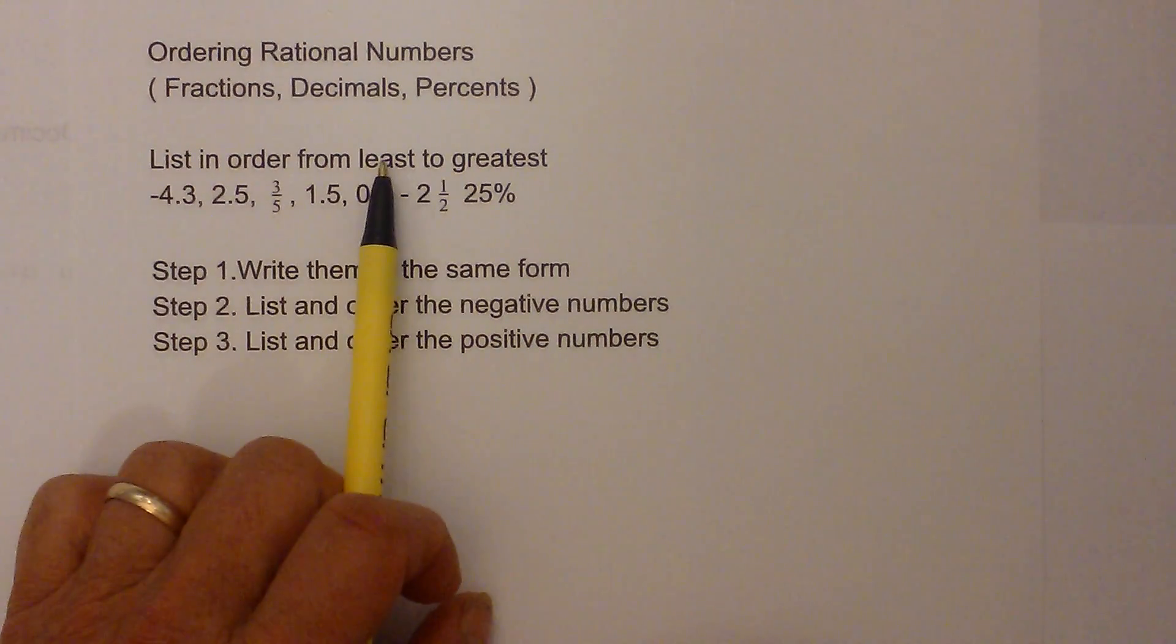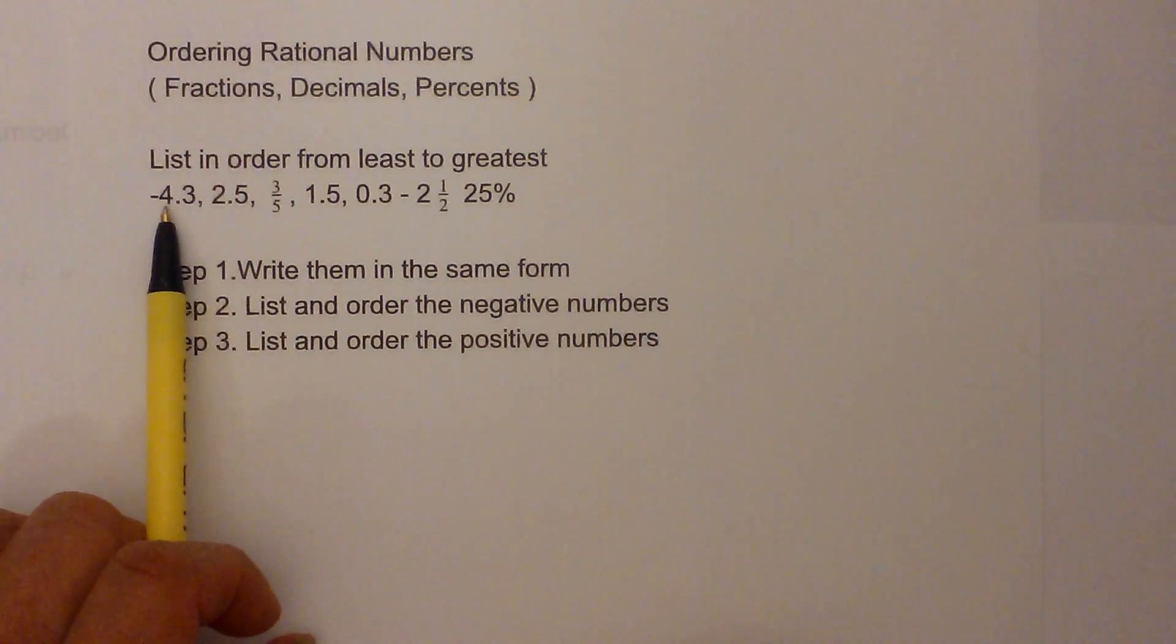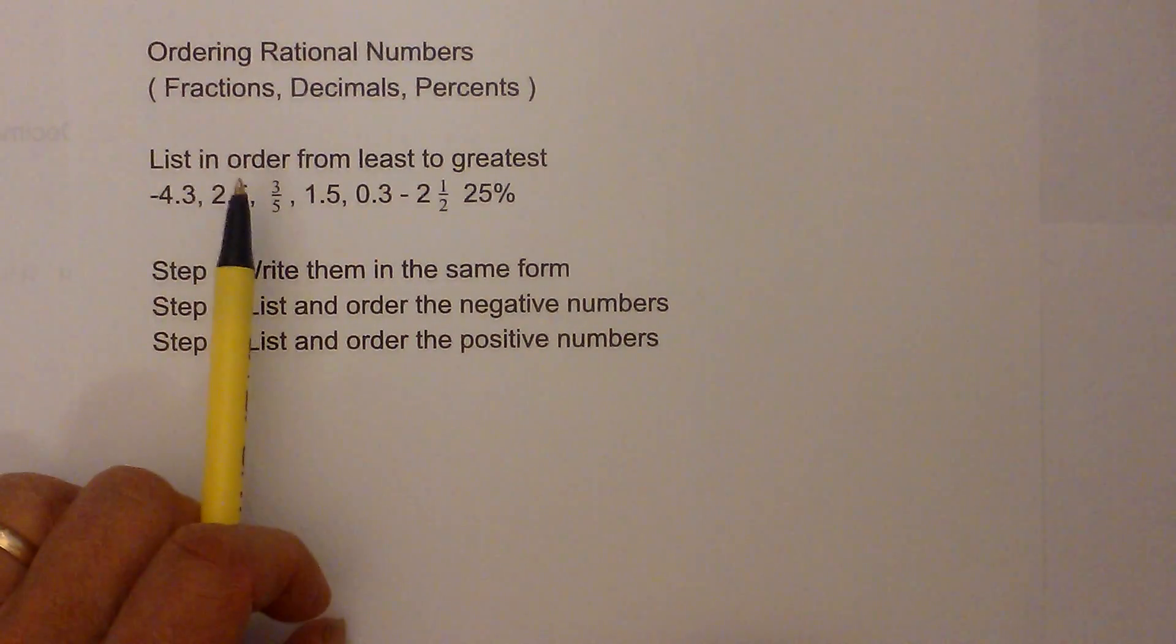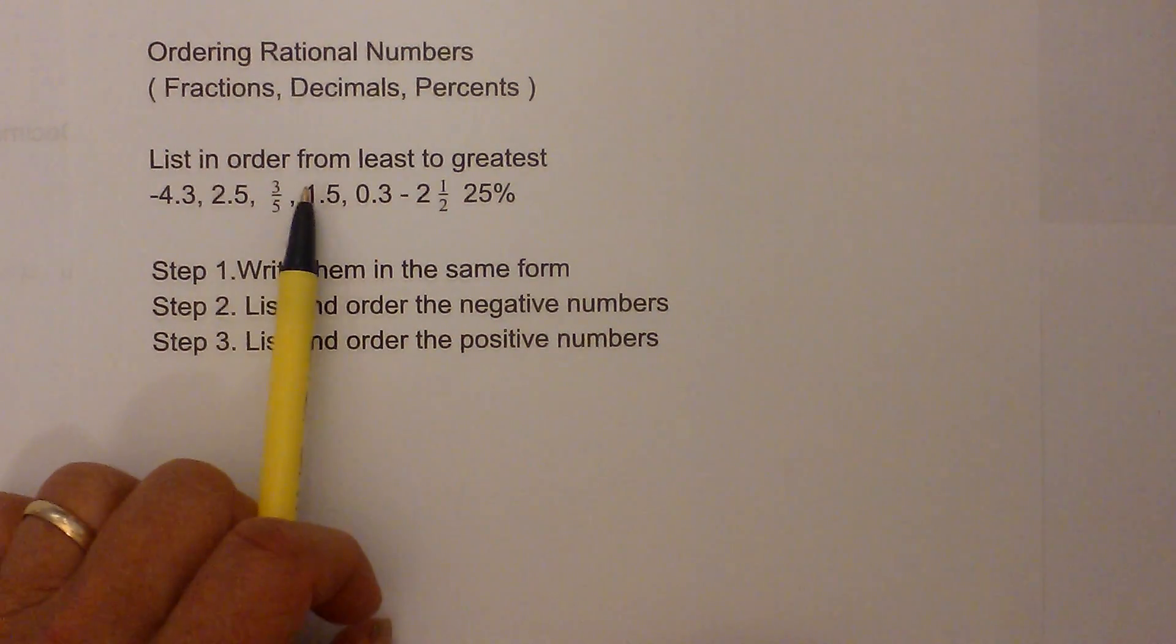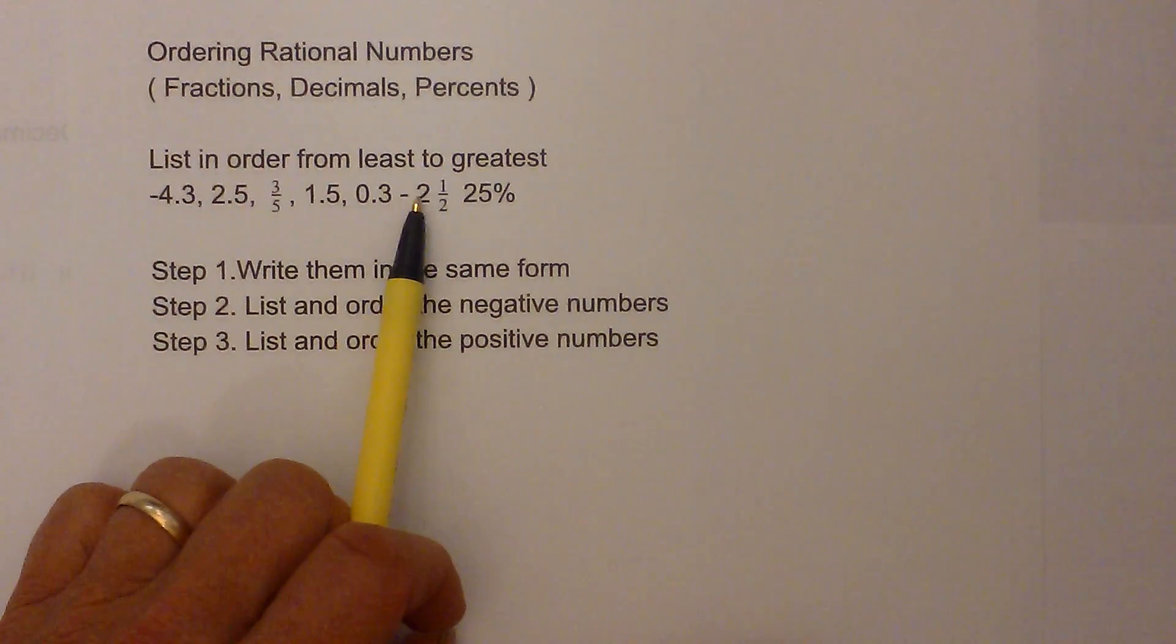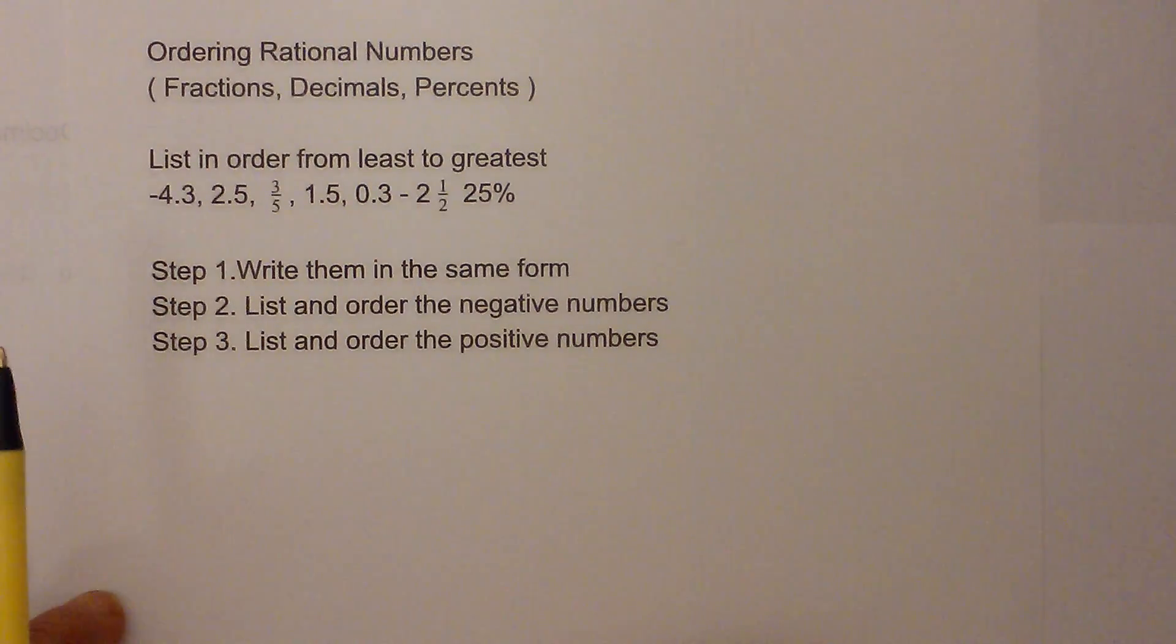I have these numbers and we are going to order them from least to greatest. I have negative 4.3, 2.5, 3 fifths, 1.5, 0.3, negative 2.5, and 25%.